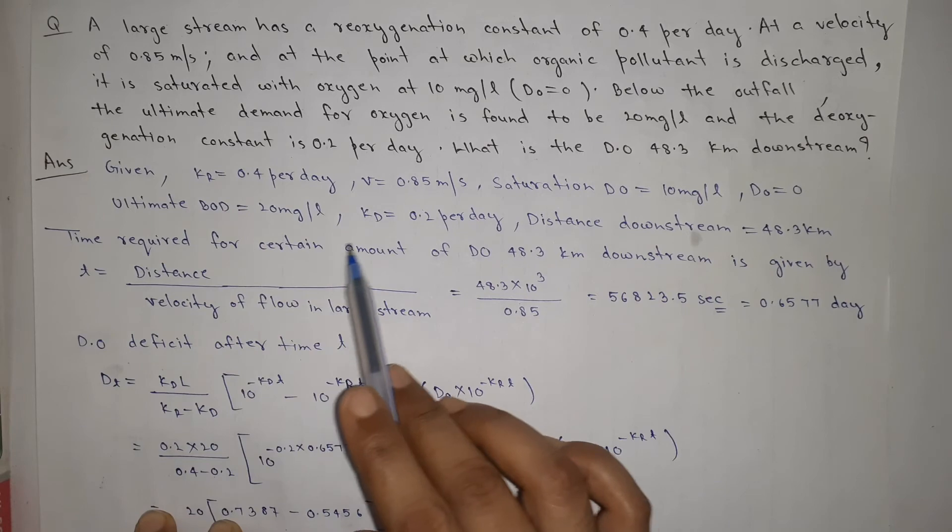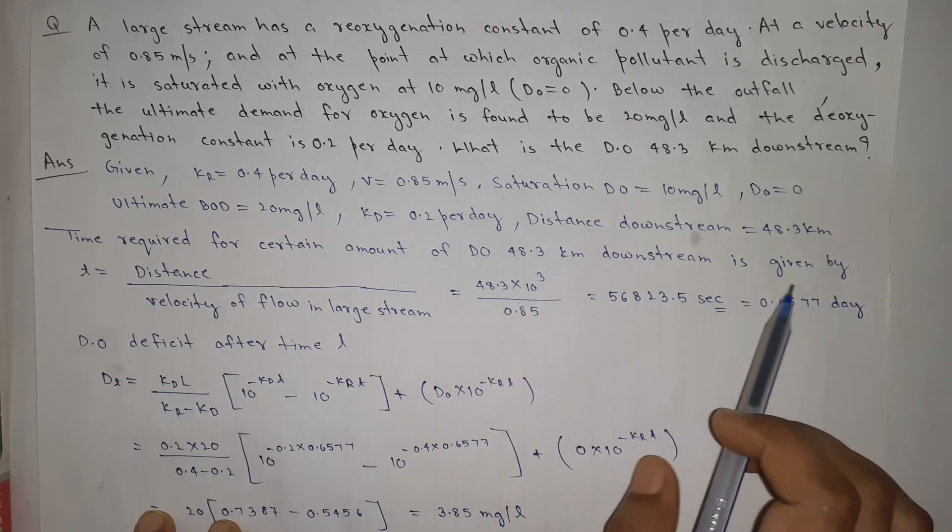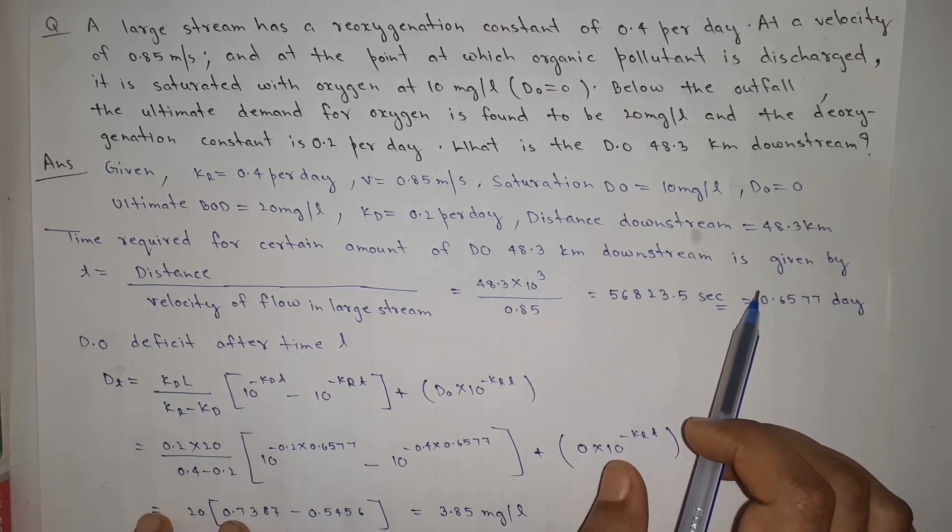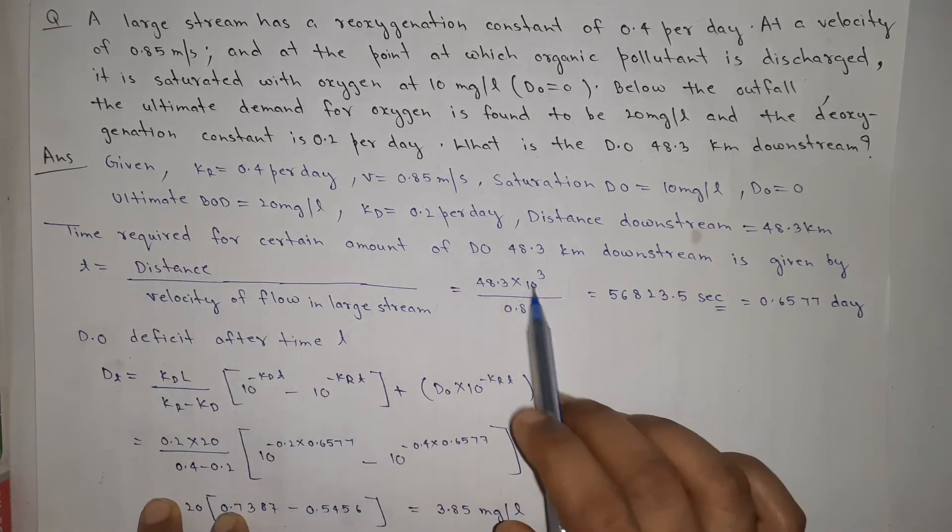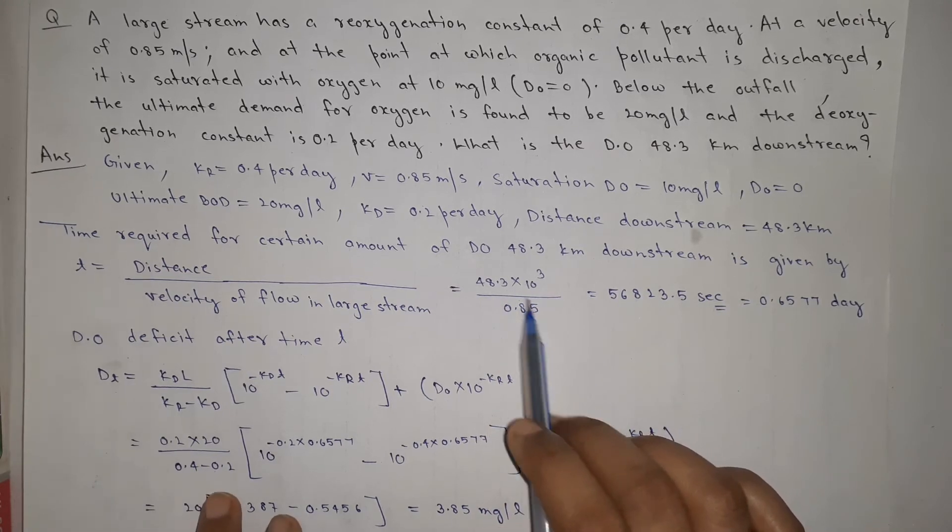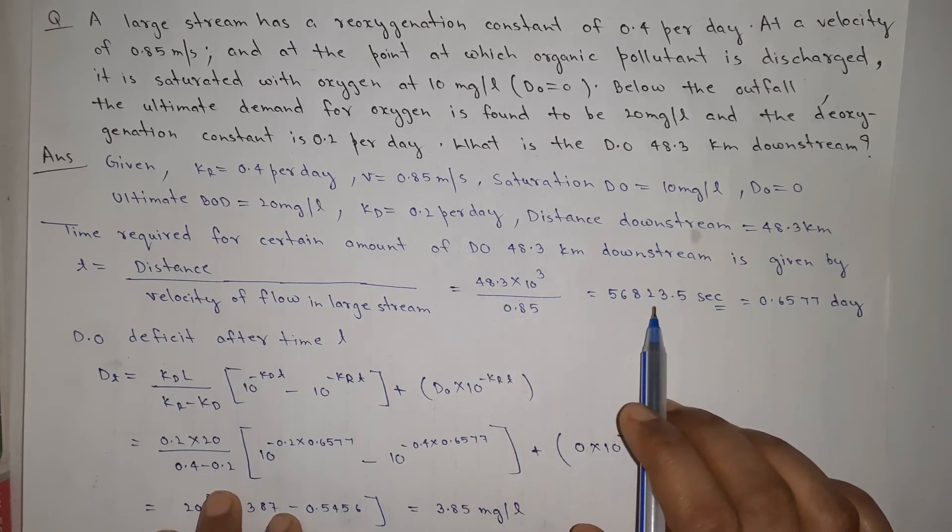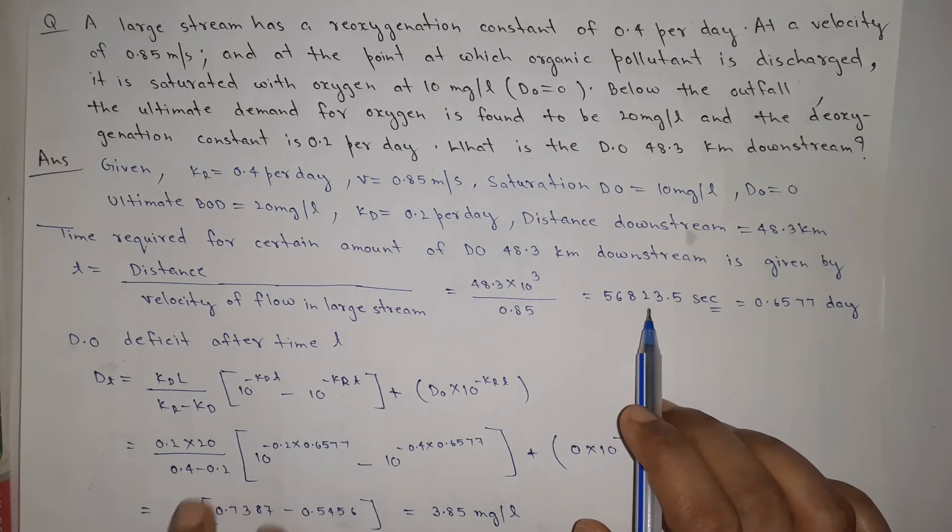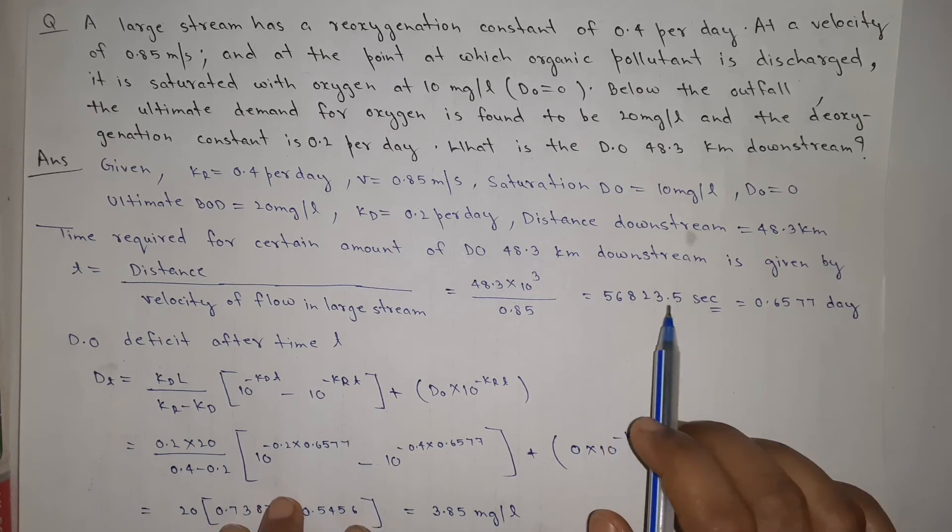Time required for certain amount at 48.3 km downstream is given by time equals distance upon velocity. After solving this, we get 56,823.5 seconds.